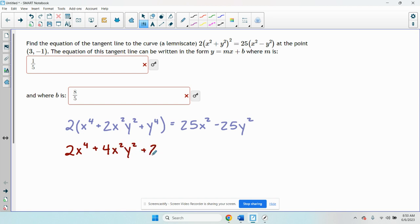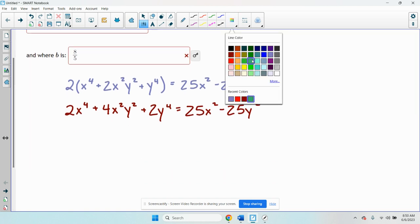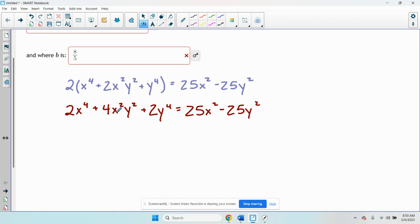Now I'm going to differentiate this using implicit differentiation, which just means anytime I differentiate a y I'm going to write dy dx. This first term, no y is involved, is a standard derivative power rule. This is going to be 8x cubed.